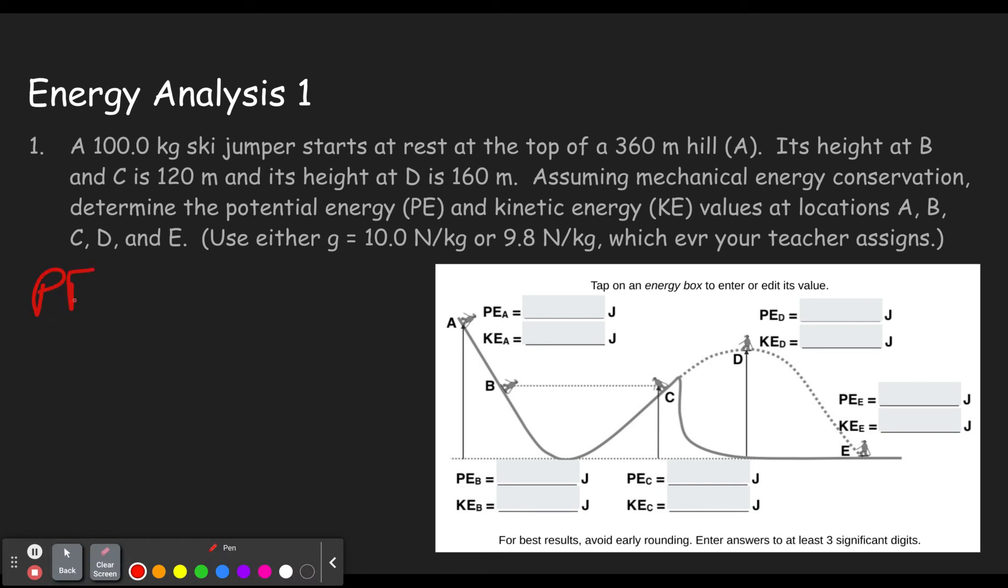So remember potential energy, gravitational potential energy, is MGH which is the mass measured in kilograms, the acceleration of gravity measured in meters per second squared which is the same thing as newtons per kilogram since we're canceling with kilograms. And then we also multiply by H which is in meters. So I'll give us newtons times meters which will give us a number in joules.